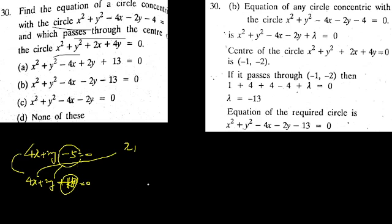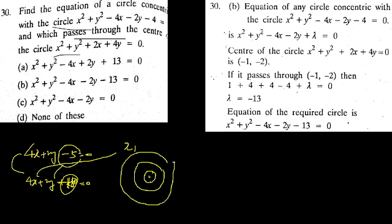Concentric circle means one and the same center. It's a circle, and it's a center — same center.